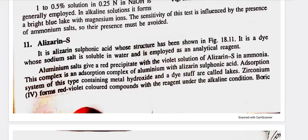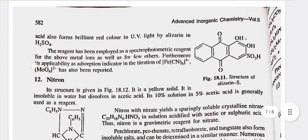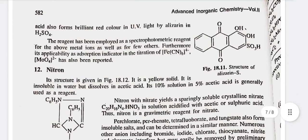Eleventh, alizarin-S — it is an alizarin sulfonic acid whose structure has been shown in figure 18.11. It is a dye whose sodium salt is soluble in water and is employed as an analytical reagent. Aluminium salts give a red precipitate with the violet solution of alizarin-S in ammonia. This complex is an adsorption complex of aluminium with alizarin sulfonic acid. Adsorption systems of this type containing metal hydroxide and a dyestuff are called lakes. Zirconium(IV) forms red-violet colored compounds with the reagent under alkaline conditions. Boric acid also forms a brilliant red color in UV light with alizarin-S. The reagent has been employed as a spectrophotometric reagent for the above metal ions as well as for a few others. Furthermore, its applicability as an adsorption indicator in titration has also been reported.